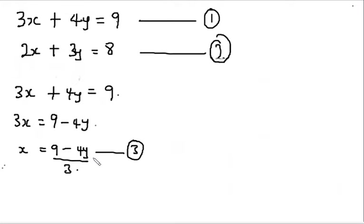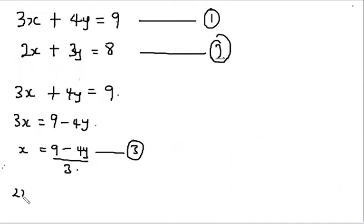The next step is to take the other equation. We need to pick a different equation — it cannot be equation 1 since that was used to derive equation 3. So we pick equation 2: 2x plus 3y is equal to 8.